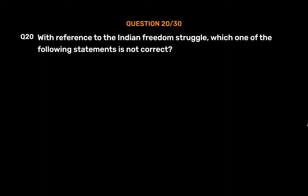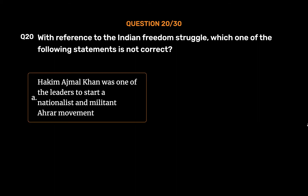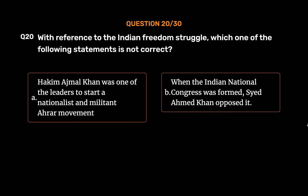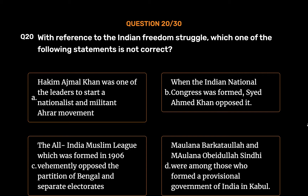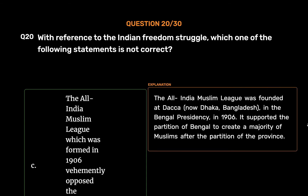Question No. 20. With reference to the Indian freedom struggle, which one of the following statements is not correct? Option A: Hakim Ajmal Khan was one of the leaders to start a nationalist and militant Ahrar movement. Option B: When the Indian National Congress was formed, Sayyad Ahmad Khan opposed it. Option C: The All India Muslim League, formed in 1906, vehemently opposed the partition of Bengal and separate electorates. Option D: Maulana Barkataullah and Maulana Obeidullah Sindhi were among those who formed a provisional government of India in Kabul. The correct answer is Option C. The All India Muslim League was founded at Dhaka in 1906. It supported the partition of Bengal to create a Muslim majority after the partition of the province.